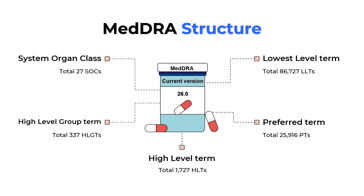Whenever you have to refer to a particular case or adverse event, you would code it using a System Organ Class, High Level Group Term, High Level Term, Preferred Term, or Lowest Level Term. Let us understand exactly how this is done through an example.